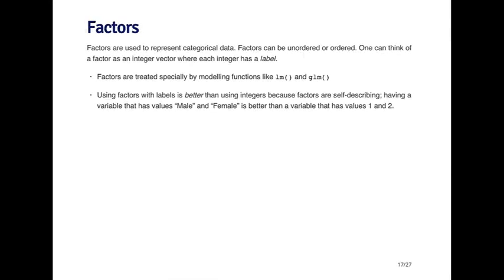A factor is a special type of vector used to represent categorical data. There are two types of factors: unordered or ordered.